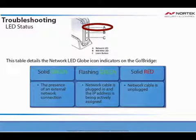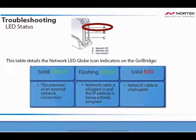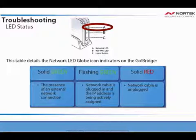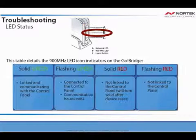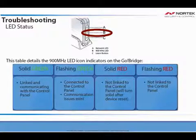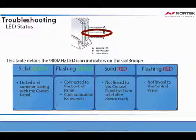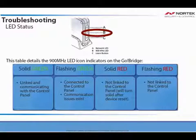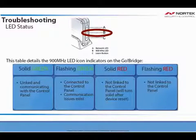This table details the LED indicators on the GoBridge IP Communicator. When the network LED globe icon is solid green, this indicates the presence of an external network connection. If it is flashing green, the network cable is plugged in and the IP address is actively being assigned. If it is solid red, the network cable is unplugged. When the 900 MHz LED is solid green, this indicates that the GoBridge is linked and communicating with the control panel. If it is flashing green, it is linked to the control panel but communication issues exist. If it is solid red, the GoBridge is not linked to the control panel, and it usually turns solid after a device reset. If it is flashing red, it is not linked to the control panel.